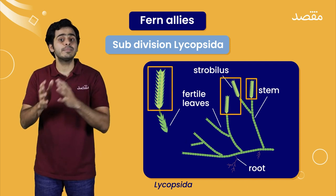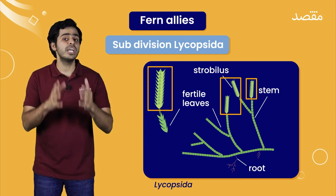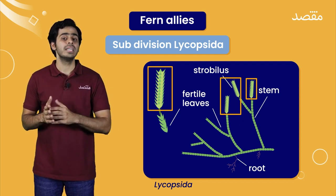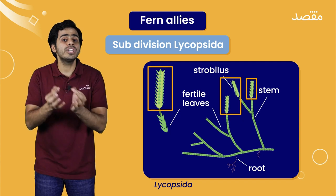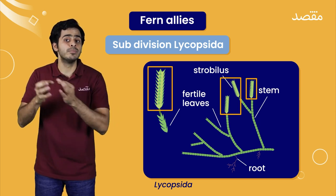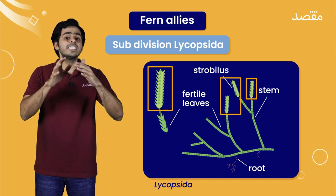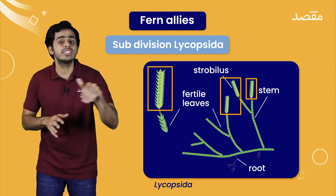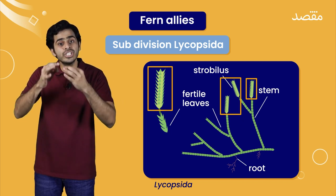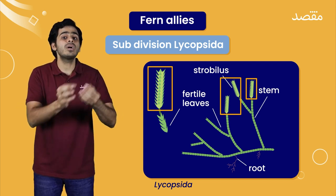In leaves peh, reproductive structures present hoote hain. Jyn ko hum sporengia bholte hain. Sporengia are the structures jyn meh meiosis ke process ke through haploid spores bantate hain. Yhe sporengia cone ki shakal meh present hoote hain. Is tarha ki leaves ko hum sporofils bholte hain, yarni ki leaves bearing sporengia on them. Yhe sporofils along the length of stem cone ki form meh ekathe present hoote hain. Is cone ki shape club ki tarha ki hooti hai. Isi wajah se hi, in ko club moses kehte hain.